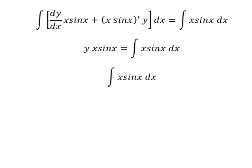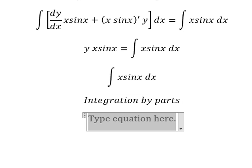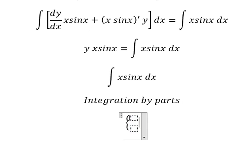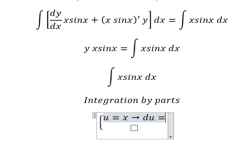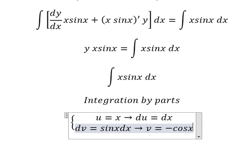We need to use integration by parts. I will put u equals to x, so we need to do the first derivative. We have du equals dx. dv equals sine x dx. The integration of this one, we have v equal to negative cosine x.